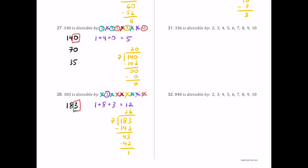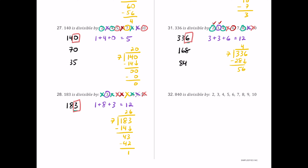For number 31, we have 336. It ends in 6, an even number, so 2 works. Half of 336 is 168 — still even — so 4 works. Half of 168 is 84 — still even — so 8 works. The digit sum 3 plus 3 plus 6 is 12, a multiple of 3 but not 9. Since 2 and 3 work, 6 works. The last digit is 6, not 5 or 0, so 5 and 10 fail. For 7: 8 times 7 is exactly 56 with remainder 0, so 7 works.